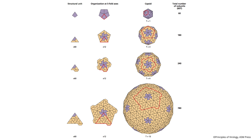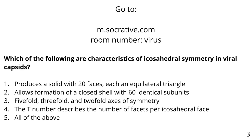Quiz: which are characteristics of icosahedral symmetry in viral capsids? A) produces a solid with 20 faces, each an equilateral triangle; B) allows formation of a closed shell with 60 identical subunits; C) fivefold, threefold, and twofold axes of symmetry; D) the T number describes the number of facets per icosahedral face; E) all of the above. 79% of you got E — all of the above — which is correct.